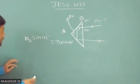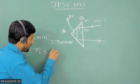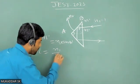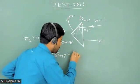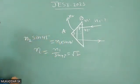It means that n2 will be n1 by sine of 45 degrees, and it will be √2, because n1 is 1 here.